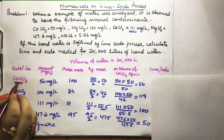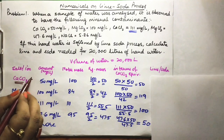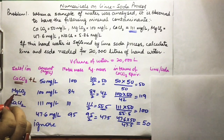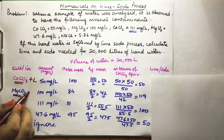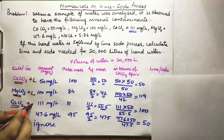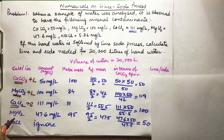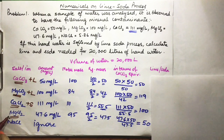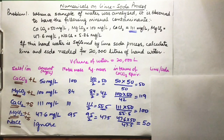Now we identify which salts go into lime and which go into soda. CaCO3 is temporary hardness of calcium — goes to lime. MgCO3 is temporary hardness of magnesium — goes to lime. CaCl2 is permanent hardness of calcium — goes to soda. MgCl2 is permanent hardness of magnesium — goes to both lime and soda. NaCl is ignored.